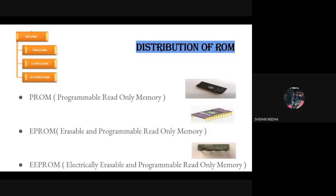ROM is divided into three parts: PROM, EPROM, and EEPROM. PROM stands for Programmable Read-Only Memory - the instructions are not written by the manufacturer; the user can write it only once. EPROM stands for Erasable and Programmable Read-Only Memory - data can be removed using UV light and then changes can be made. EEPROM stands for Electrically Erasable and Programmable Read-Only Memory - data can be removed using electricity.